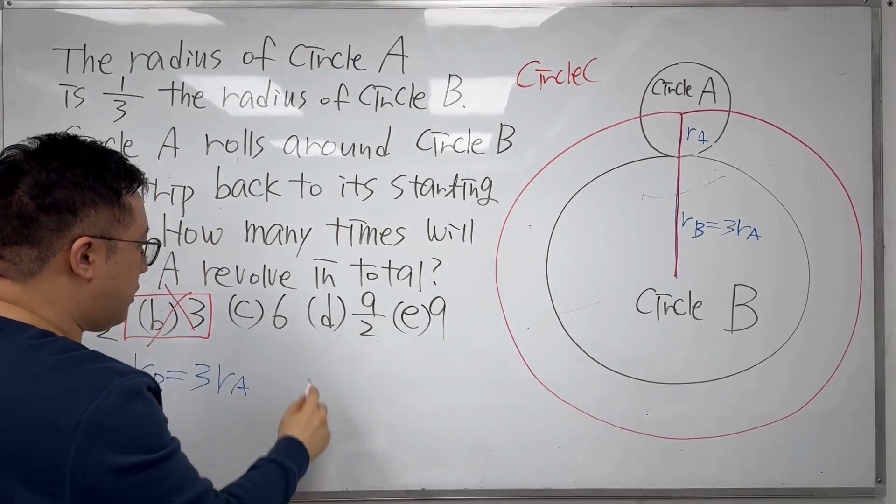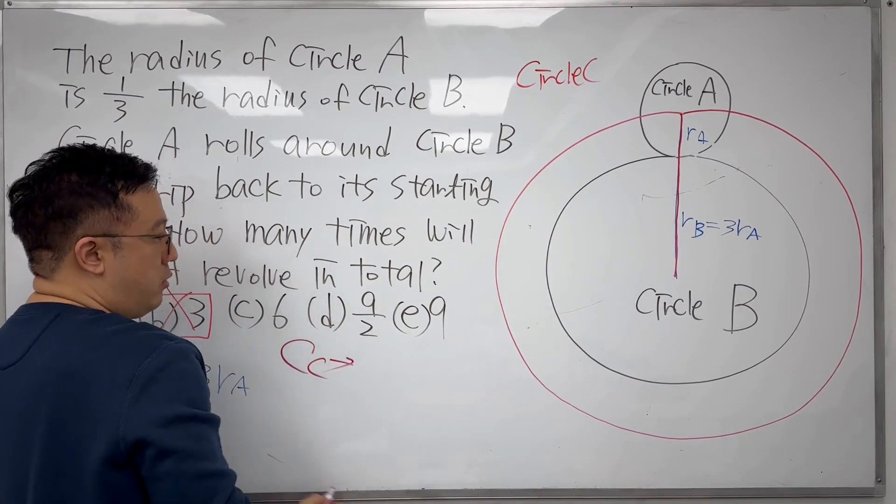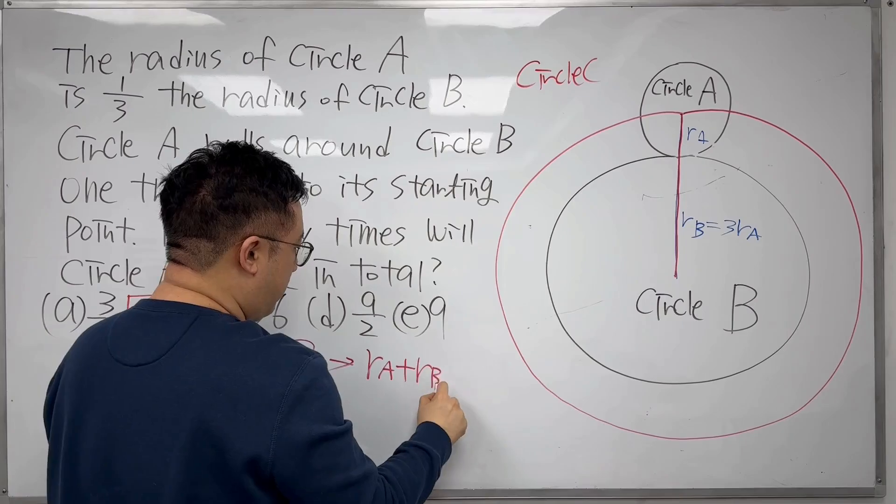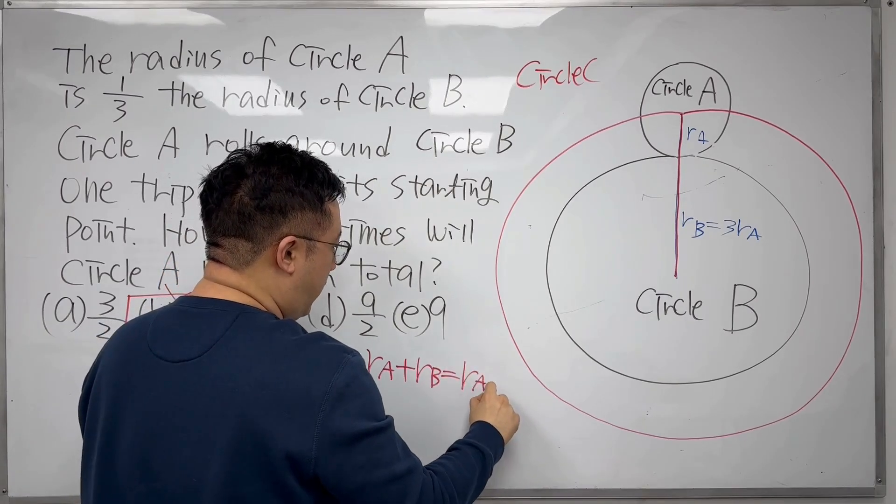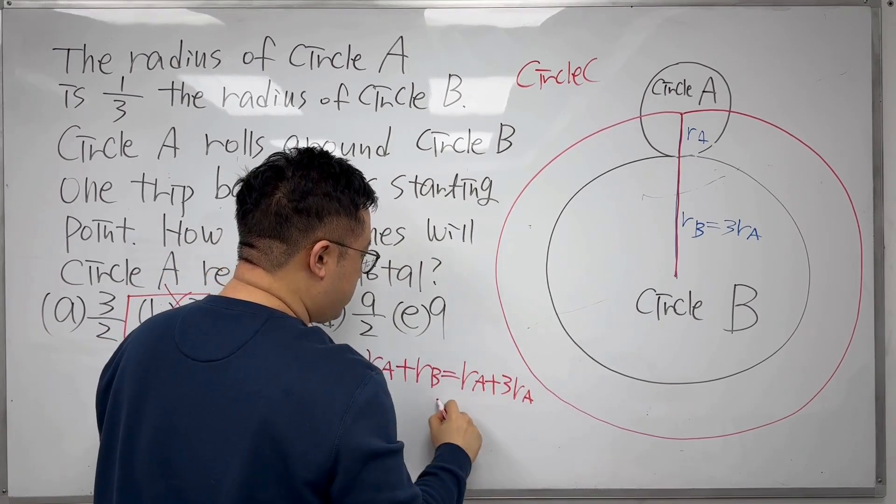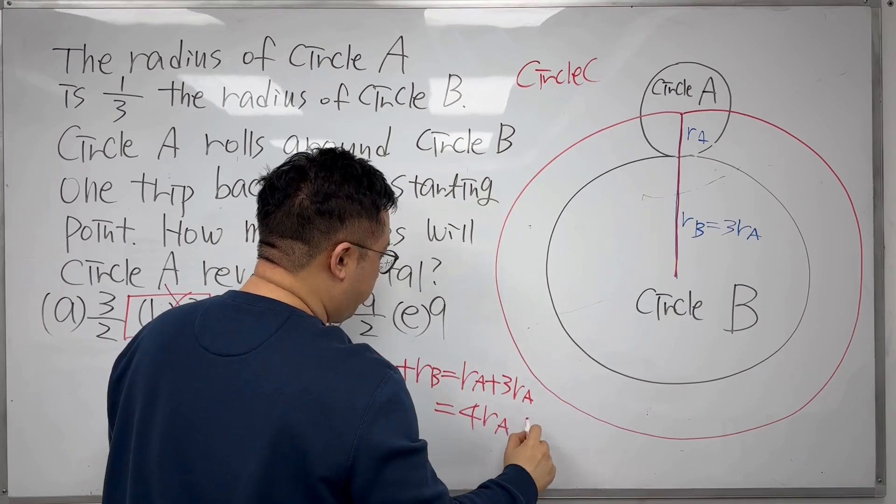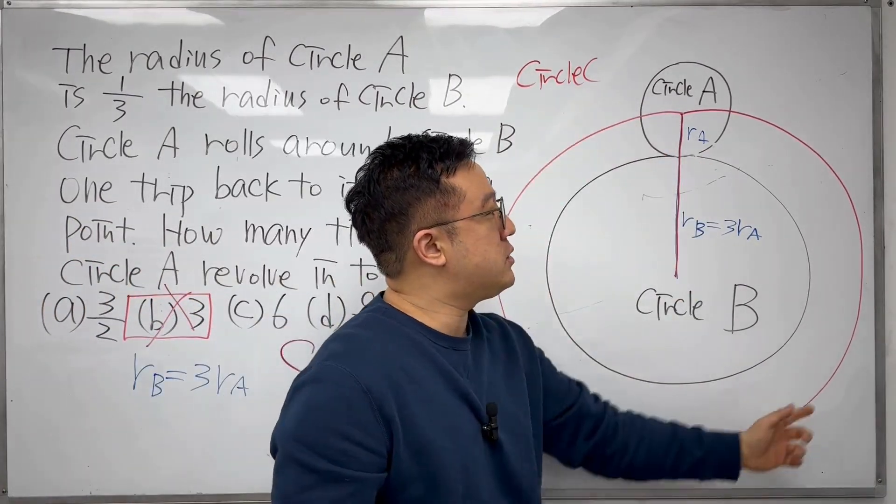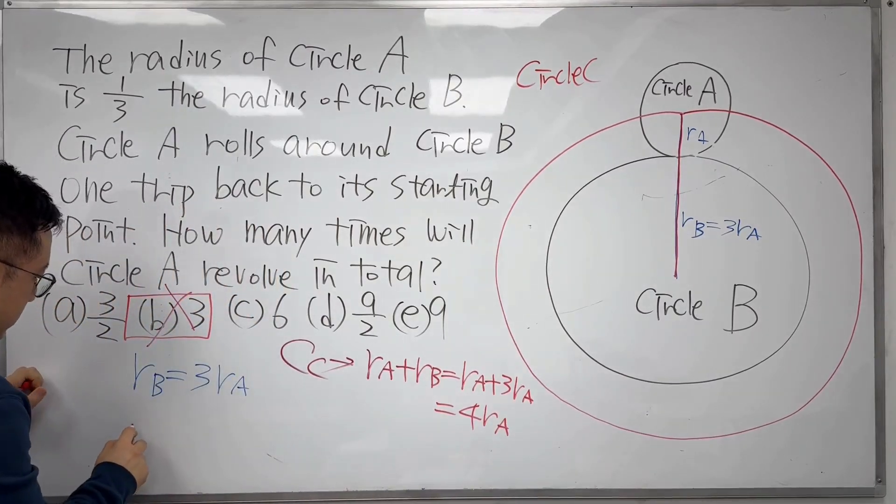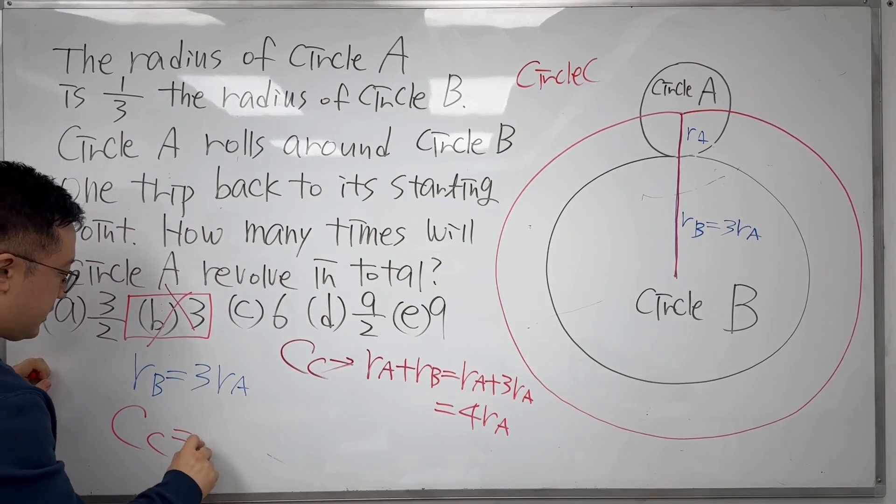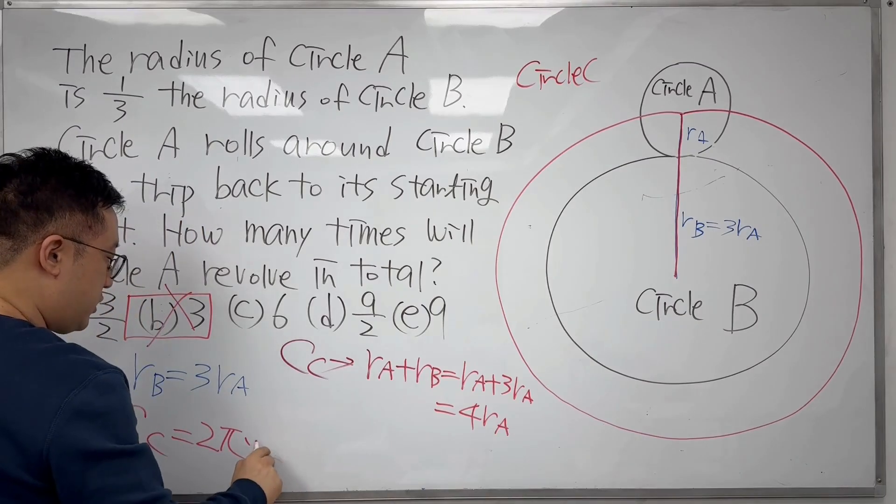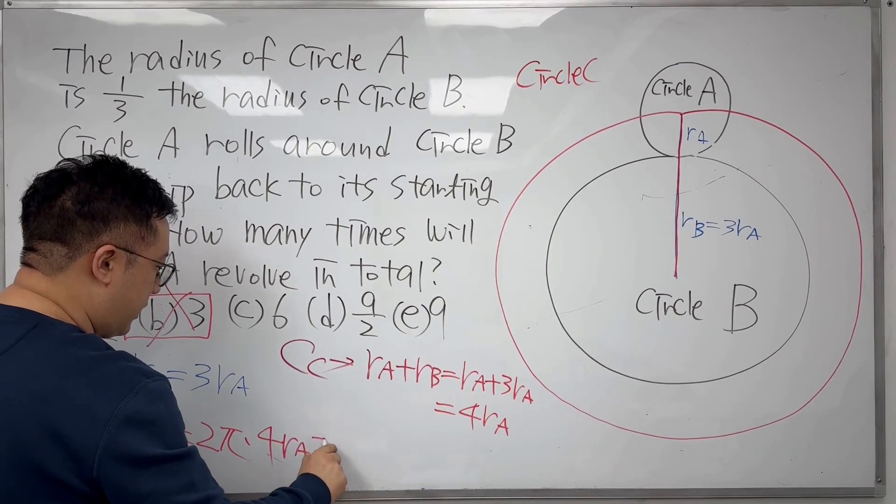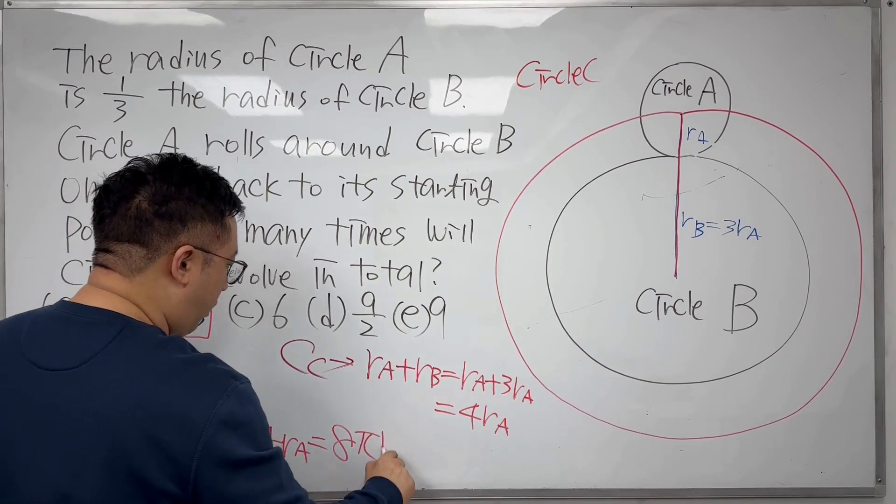It should have its radius of RA plus RB. So for circle C, the radius is RA plus RB. This equals RA plus 3RA, which is 4RA. So if you calculate the circumference of circle C, which is in red, the circumference of circle C equals 2π times the radius, which is 4 times RA. That is 8π·RA.